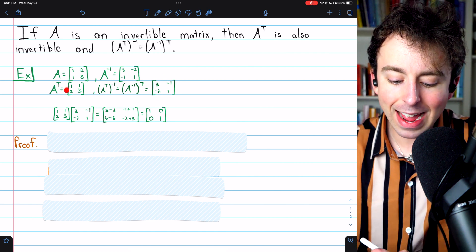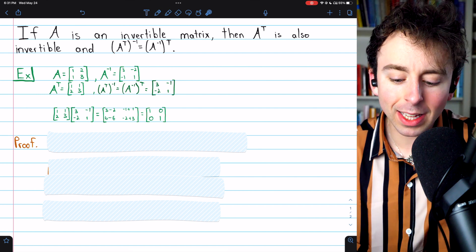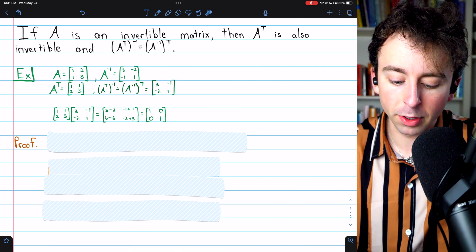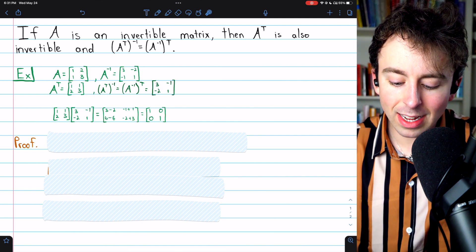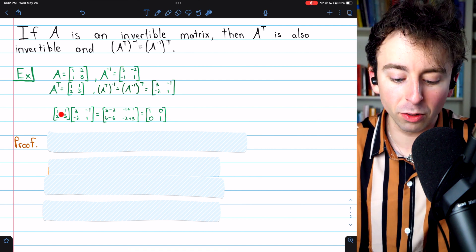Now we can take A transpose on the left and multiply it by what we're claiming the inverse is, which is A inverse transpose. And you can see this multiplication does give us the identity. You can see that it actually does work.